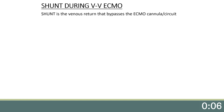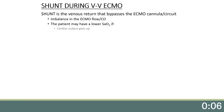Hypoxemia and V-V ECMO shunt can be approached by optimization of the ECMO flow to cardiac output ratio. The shunt on V-V ECMO is the amount of the patient's venous return that bypasses the ECMO cannula and circuit. This can result in a unique physiology that may seem counterintuitive. That is, if the patient's cardiac output increases, the result may be a lower arterial oxygen saturation. This is due to the decrease in the ECMO flow to cardiac output ratio, resulting in more shunting of deoxygenated blood at a constant ECMO flow rate. Similarly, a decrease in ECMO flow can also cause an increase in the relative shunt, also resulting in a lower arterial oxygen saturation.